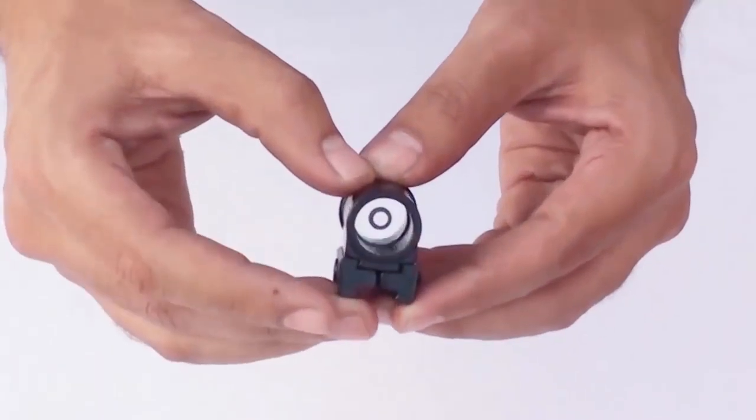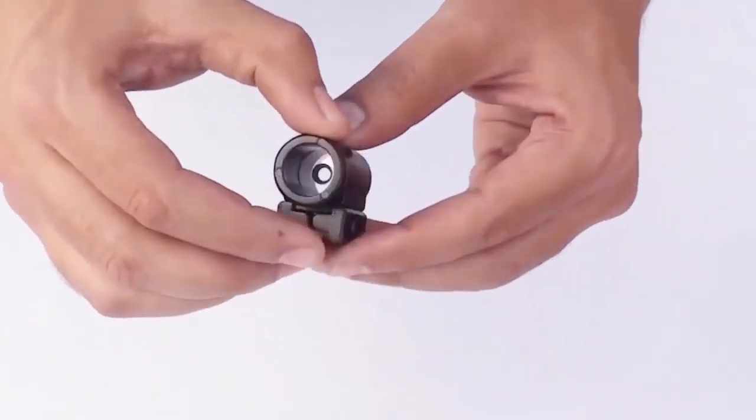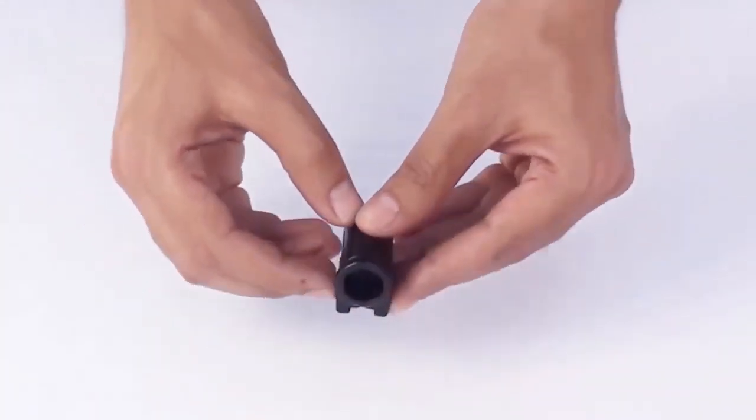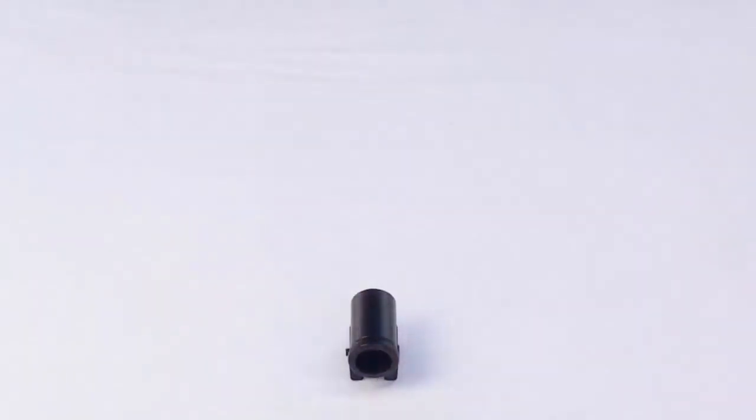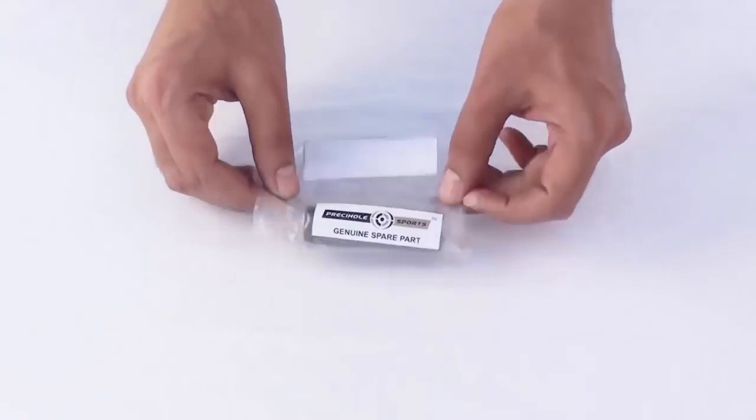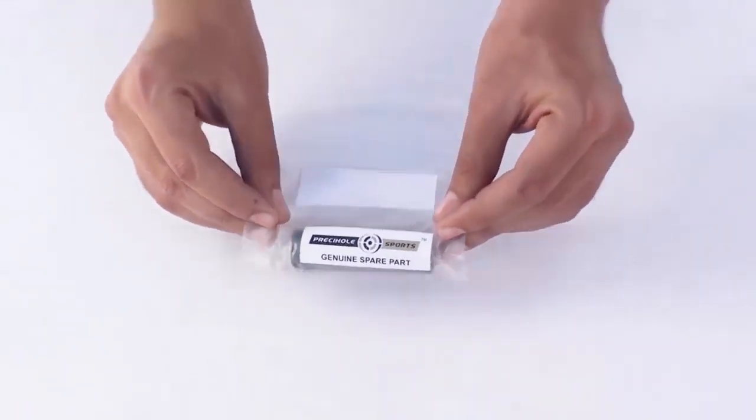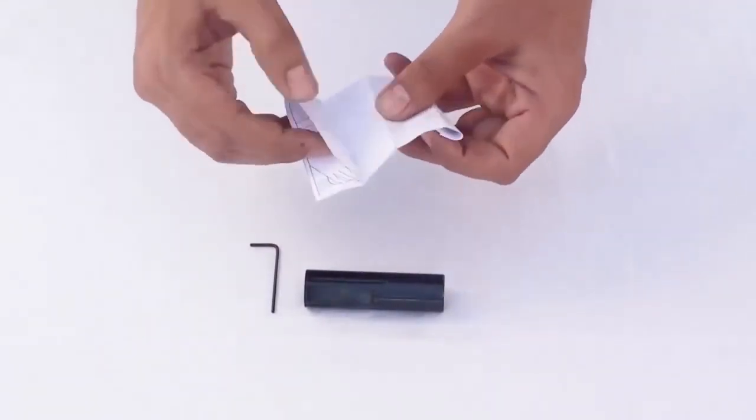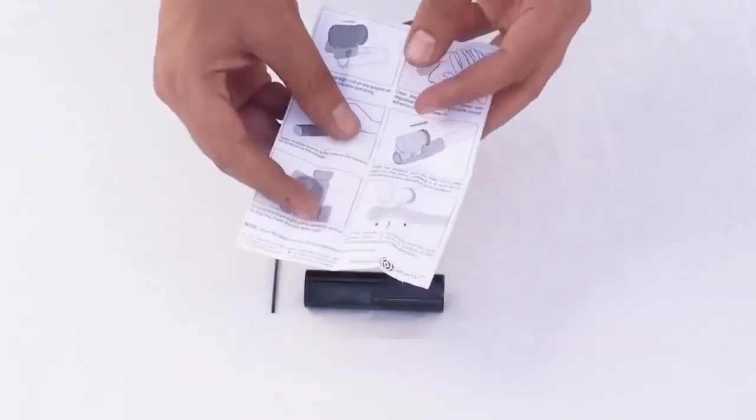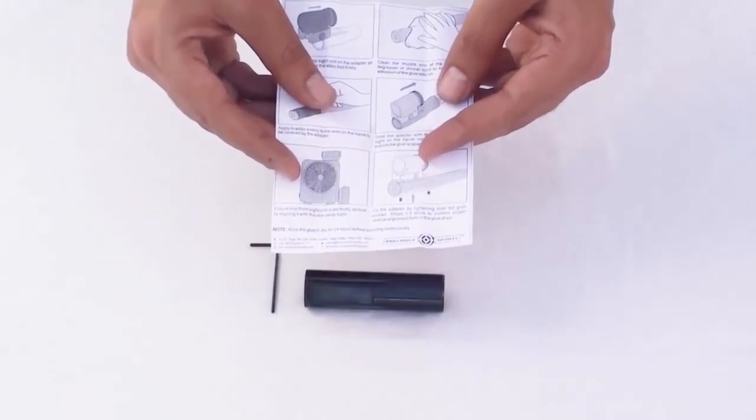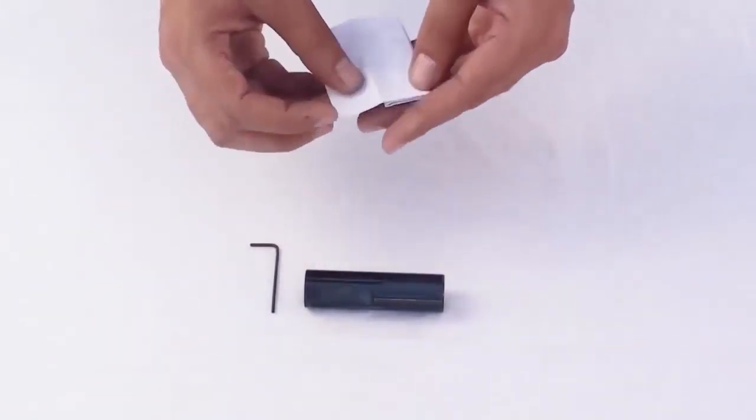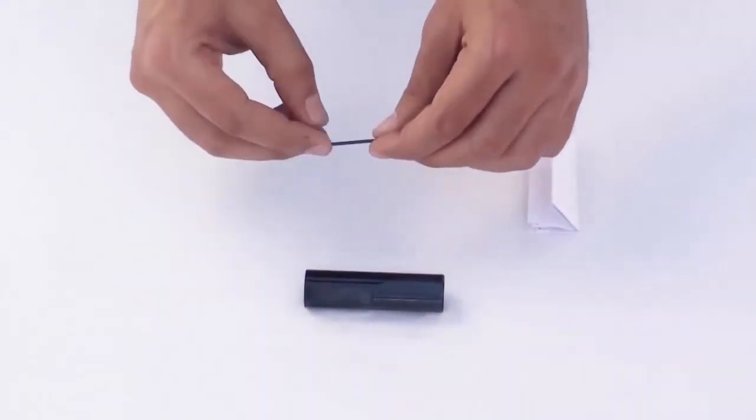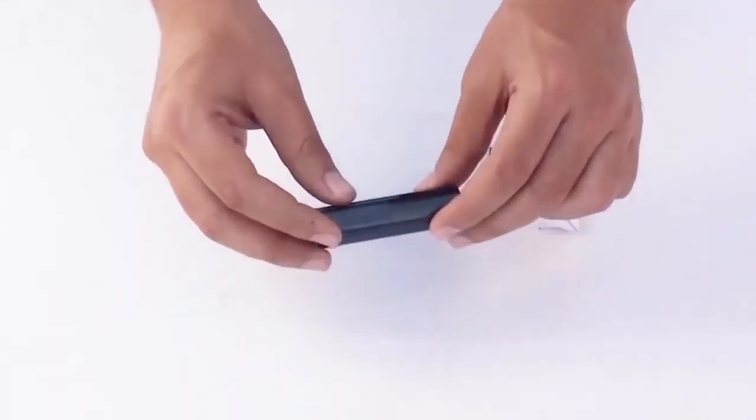This is the front PeepSight. This is the PeepSight adapter package. This package contains an instructional sheet, an Allen key and the adapter.